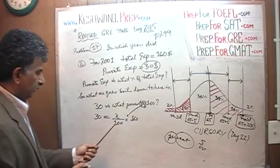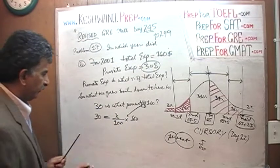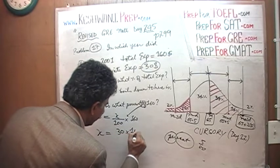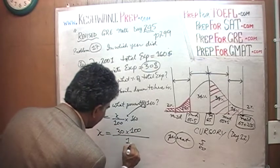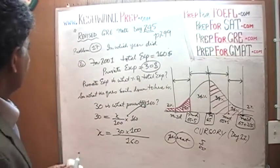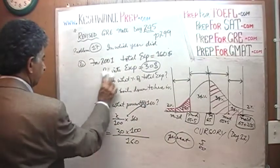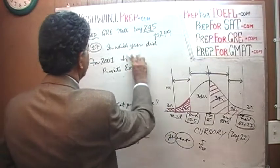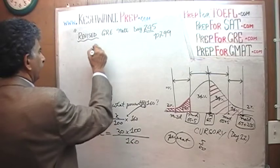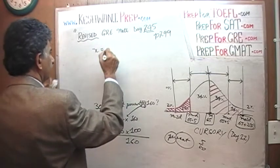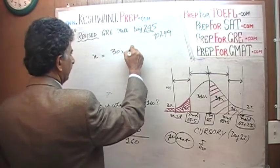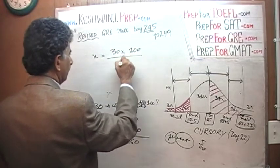Of means times 160. We are just going to solve for it. Multiply both sides by 100. Divide both sides by 160. And X equals 30 times 100 over 160. Let's do it on the top here.